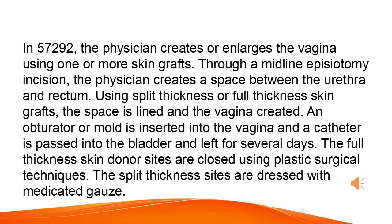Construction of Artificial Vagina, With Graft: The physician creates or enlarges the vagina using one or more skin grafts. Through a midline episiotomy incision, the physician creates a space between the urethra and rectum. Using split thickness or full thickness skin grafts, the space is lined and the vagina created. An obturator or mold is inserted into the vagina and a catheter is passed into the bladder and left for several days. The full thickness skin donor sites are closed using plastic surgical techniques. The split thickness sites are dressed with medicated gauze.